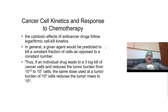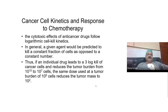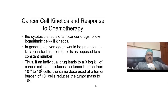Let's talk about cell kinetics and response to chemotherapy. To understand how chemotherapy kills, you have to understand cell kinetics. Normally, if you look at growth kinetics, the most familiar example would be in reproduction — from a single cell to a zygote, progressing from 2 to 4, 4 to 16, and 16 to 64 cells — which is called exponential growth.